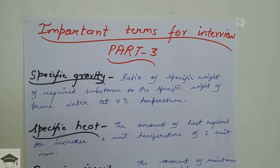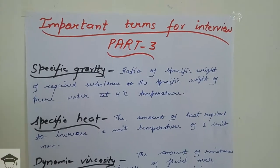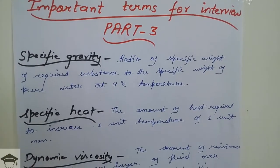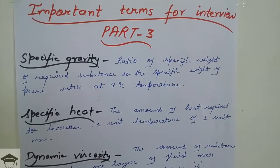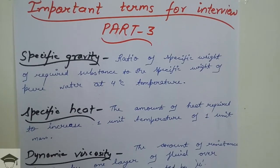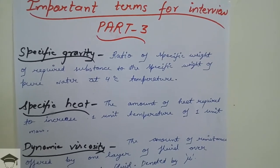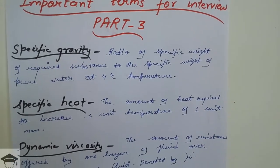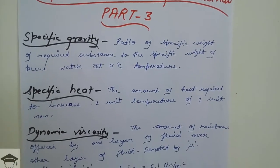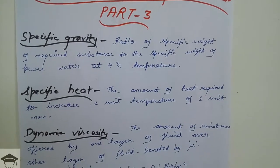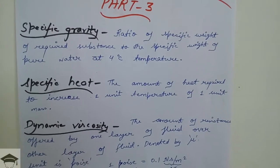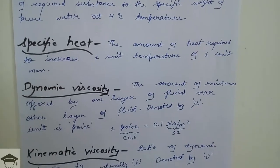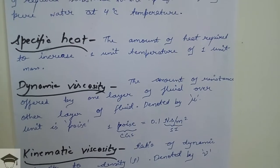Specific gravity: the ratio of the specific weight of a required substance to the specific weight of pure water at 4 degrees Celsius temperature. Specific heat: the amount of heat required to increase one unit temperature of one unit mass.